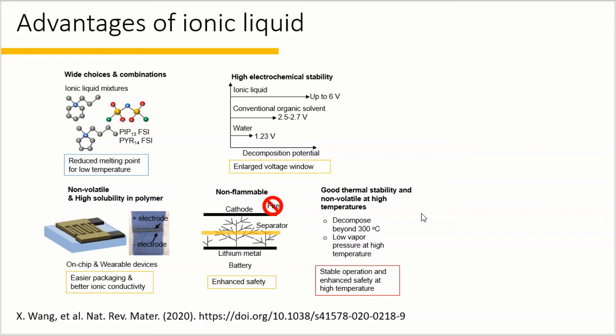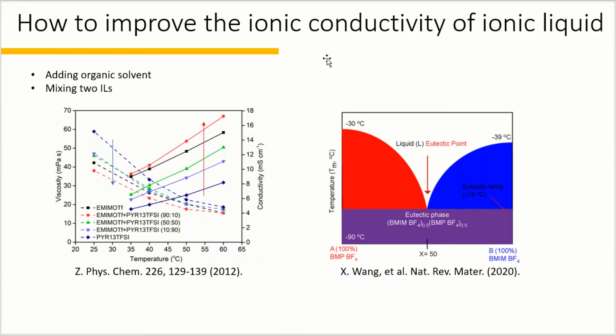For ionic liquids, one of the major limitations is the relatively low ionic conductivity compared to aqueous and organic electrolytes. One common approach to improve the ionic conductivity of ionic liquid is to mix the ionic liquid with a low viscosity organic solvent. But as soon as the solvent is added, the ionic liquid acts as a salt and the electrolyte becomes an organic electrolyte instead of an ionic liquid.